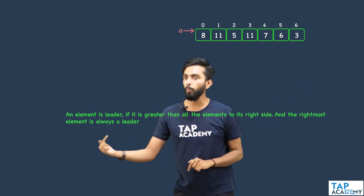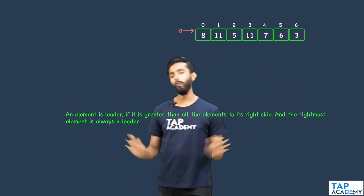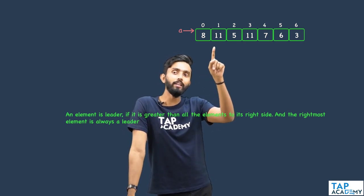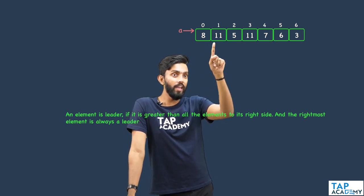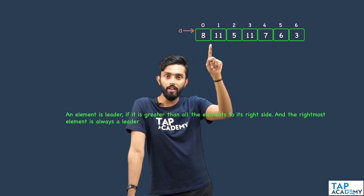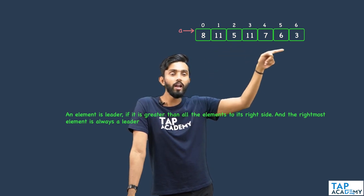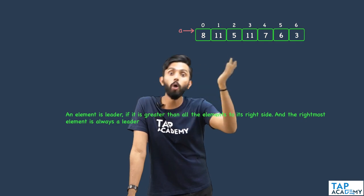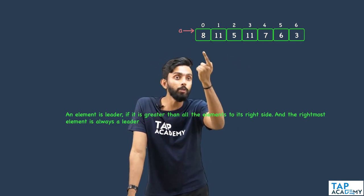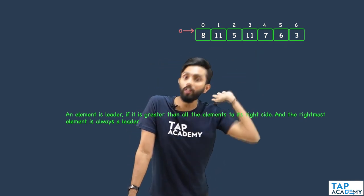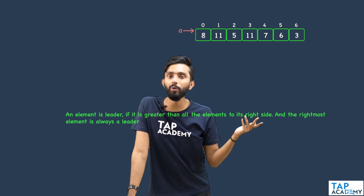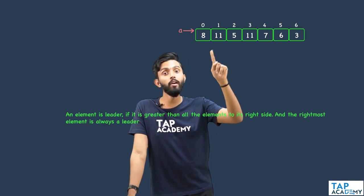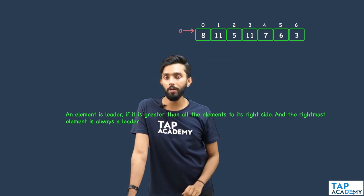And the rightmost element is always a leader. Going by this definition, let's start with 8. Is 8 a leader? If 8 has to be a leader, then all elements to the right of 8 must be lesser than 8. However, the next element itself is 11. Since 11 is greater than 8, 8 is not a leader.